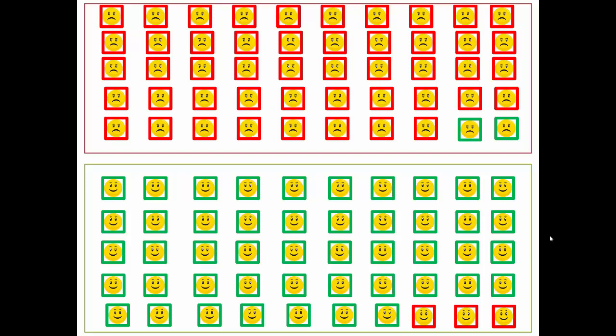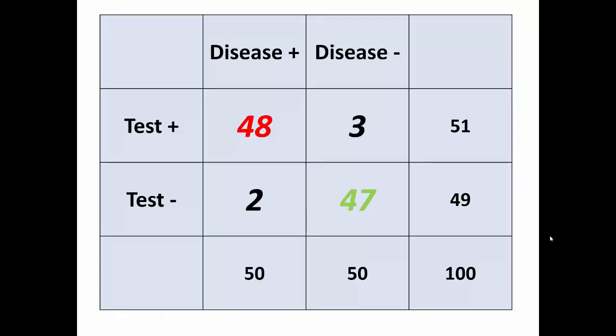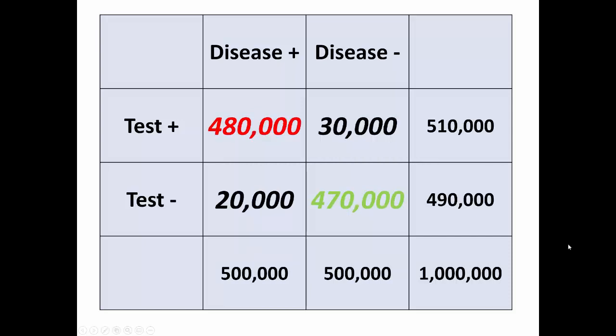Let's go back to the table. This was our initial calculation, and the prevalence rate was 50%, or one out of every two people. Now, if we just tested a lot more people but the prevalence rate was the same, these are what the numbers would look like. Prevalence is still 50% but there are a lot more people in this table. The results are the same — sensitivity, specificity, and total accuracy work out to be the same numbers.